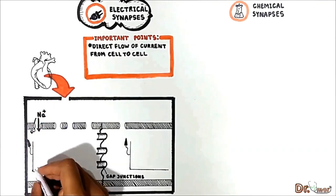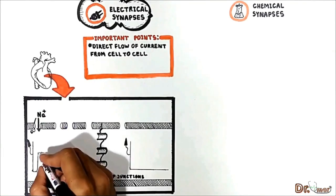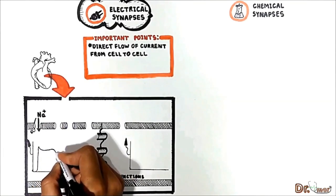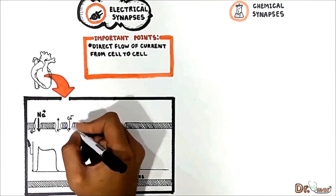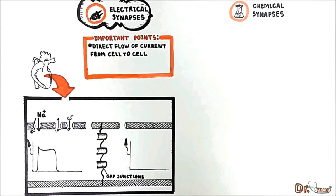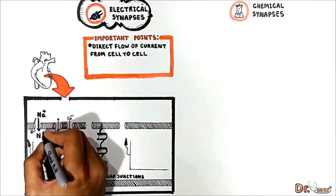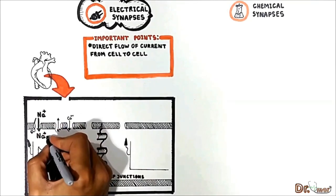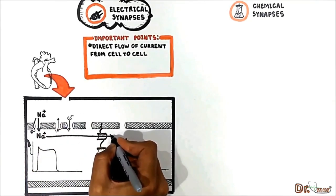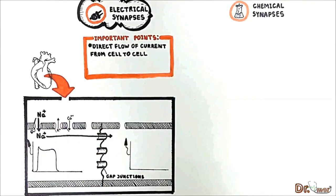Voltage-gated sodium channels depolarize the cell initiating an action potential. When the first cell depolarizes the sodium further flows forward from first cell to the second through gap junctions.